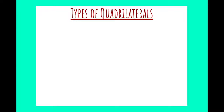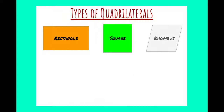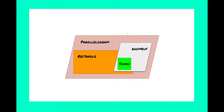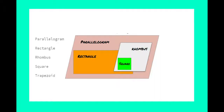As a quick review, we talked about types of quadrilaterals: rectangle, square, rhombus, parallelogram, and trapezoid. As mentioned in a previous video, we talked about the quadrilateral club and how parallelograms, rectangles, rhombi, and squares all get into that particular club.